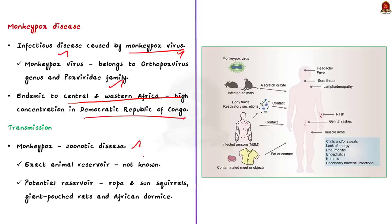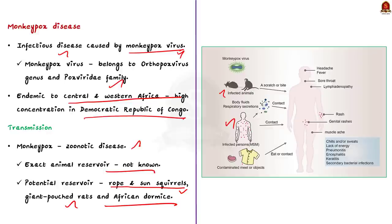Monkeypox is a zoonotic disease, meaning it can spread from animals to humans. The exact animal reservoir is still unknown, but small mammals in western and central Africa — like rope squirrels, sun squirrels, giant-pouched rats and African dormice — are thought to maintain the virus in the environment. Humans get infected through direct contact with infected animals while hunting, trapping and processing their body parts and fluids. The monkeypox virus can also spread human-to-human through close contact, large respiratory droplets from coughing and sneezing, bodily secretions, skin lesions and contaminated articles.